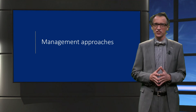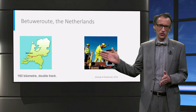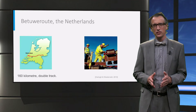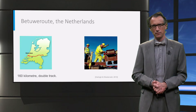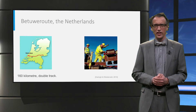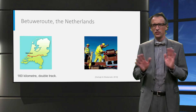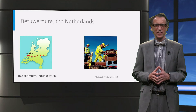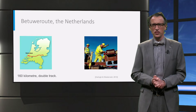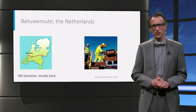Let us first start with an example. The example is of the Betu route, a rail freight line in the Netherlands that was delivered in 2007. In the 90s the railway line was planned and there was great opposition against the line. People didn't understand the need for this and said, not in my backyard. One of these problems was that the project was planned without sufficient interaction with stakeholders.